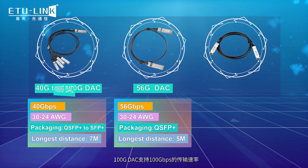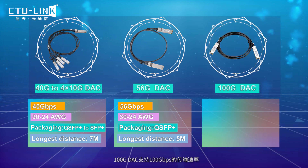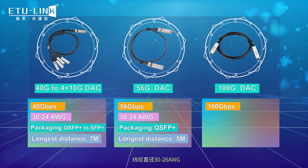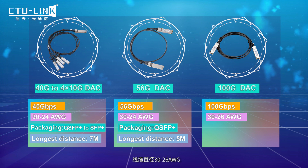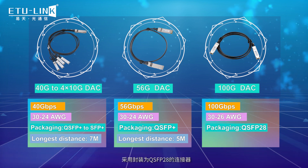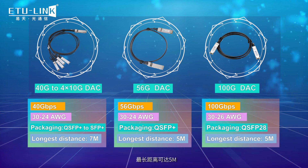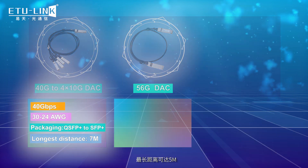The 100 Gb DAC supports a transmission rate of 100 Gb. The cable diameter is 30 to 26 AWG, the packing form is QSFP28, and the longest distance can reach 5 m.